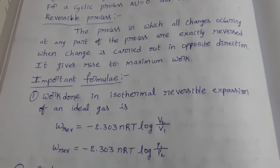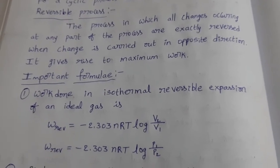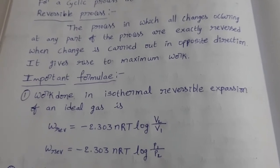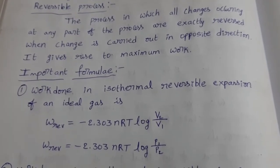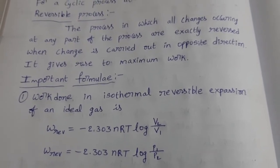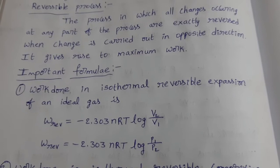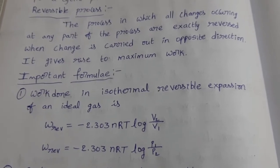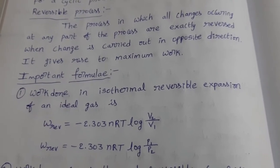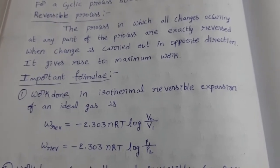Next, the important formula: work done in isothermal reversible expansion of an ideal gas. W_rev equals minus 2.303 nRT log of V2 by V1. In terms of pressure, the formula is minus 2.303 nRT log of P1 by P2. Here V1 is initial volume, V2 is final volume, P1 is initial pressure, P2 is final pressure. Remember these carefully — multiple choice questions come based on this.